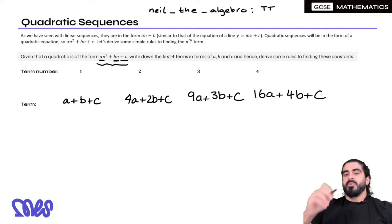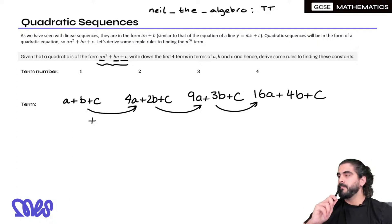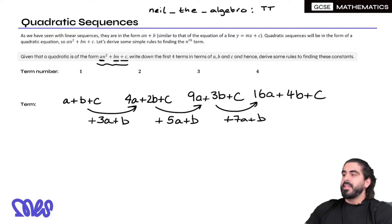Now remember with linear sequences we're looking at what we have to add. We're going to do the same thing. We need to work out what do we need to add to go from term to term. So guys, a plus b plus c, what do you need to add to a plus b plus c to give you 4a plus 2b plus c? So it's just a plus 3a gives you 4a, b plus b gives you 2b, and then c is just c. 5a plus b. Good guys. What about the last one? What do you have to add there? 7a plus b, good. Now this is where things become really cool.